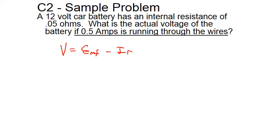We set this up as EMF minus the current through the circuit times the resistance, and we would get 11.975 volts as the effective voltage—the actual voltage that we would have. We would subtract that from the EMF.